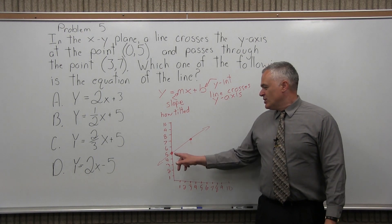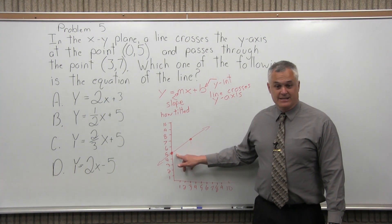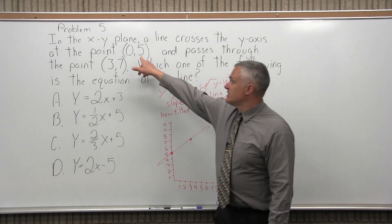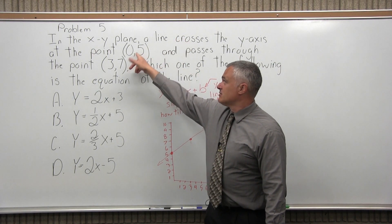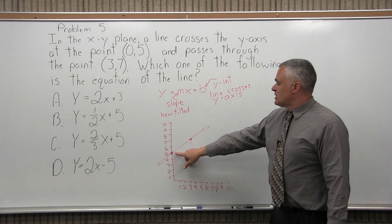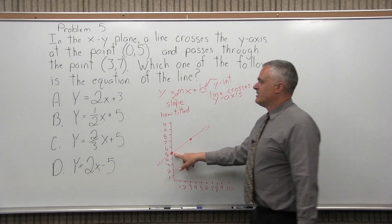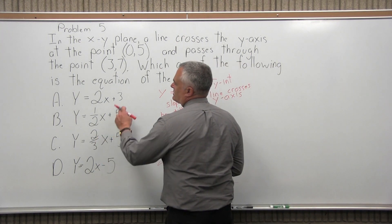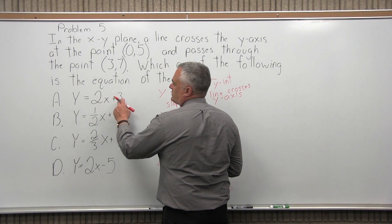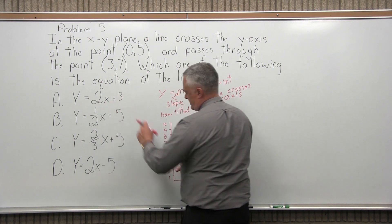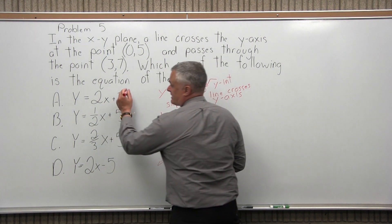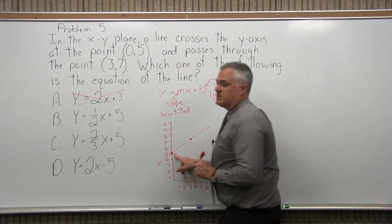Now that we have the picture, notice it crosses the y-axis at a height of 5, which is basically what they're telling you here. It crosses the y-axis at the point (0,5). So now, that being said, I can eliminate two of these right away. This first option, y equals 2x plus 3, would imply that the line crosses at a height of 3, which we can see is not the case. So the answer cannot possibly be A.